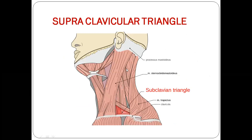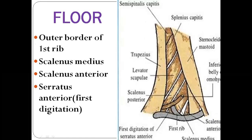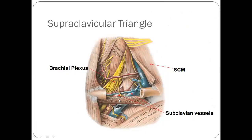Below the inferior belly of omohyoid is the subclavian triangle. Boundaries: anteriorly — posterior border of sternocleidomastoid; above — inferior belly of omohyoid; below — middle one-third of the clavicle. Roof: skin, superficial fascia, platysma, investing layer of deep cervical fascia. Floor: outer border of the first rib, scalenus medius, scalenus anterior, and first digitation of serratus anterior. Contents: third part of the subclavian artery, corresponding subclavian vein, terminal part of the external jugular vein, trunks of the brachial plexus, superficial transverse cervical artery, suprascapular artery, dorsal scapular arteries, and deep cervical lymph nodes.